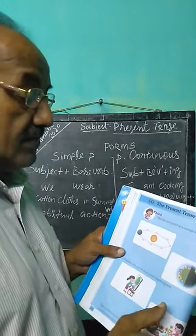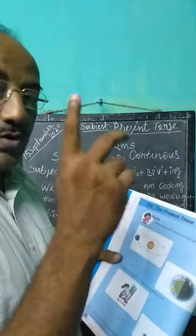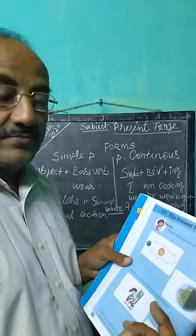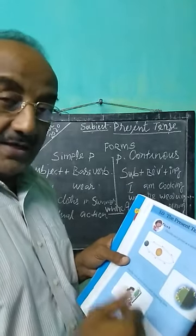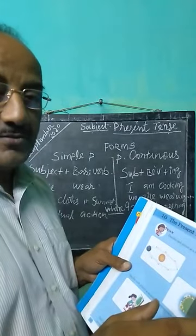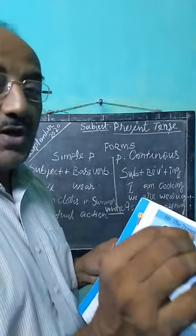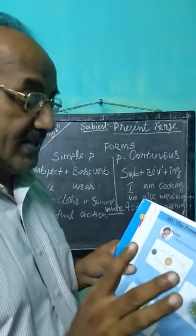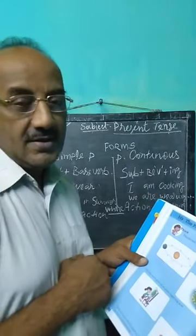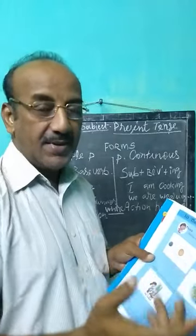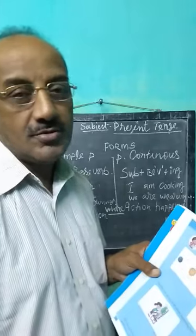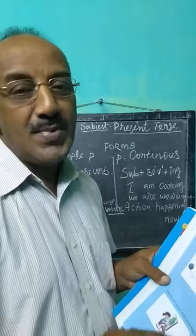Here you see: it was going, it will be going, it is going. So for all these, we are using only simple present tense. That's what is known as a universal fact — it happened, it is happening, it will happen. So there you can use simple present tense.